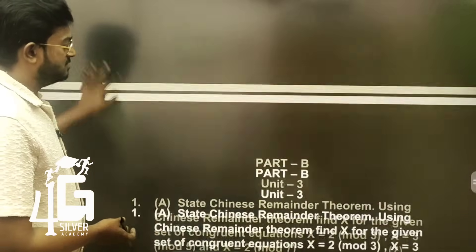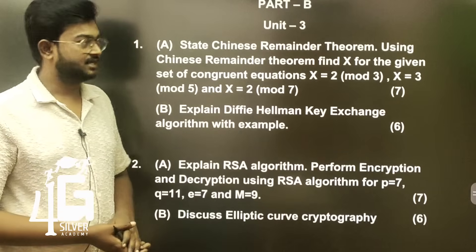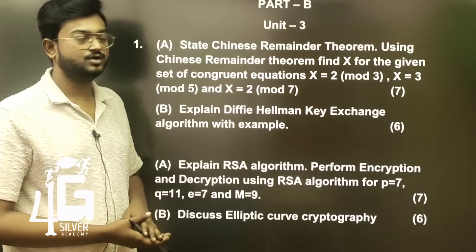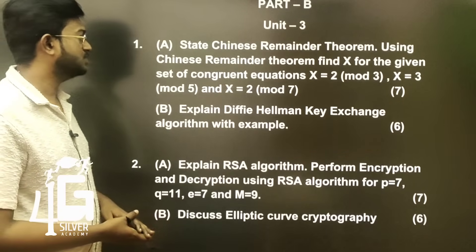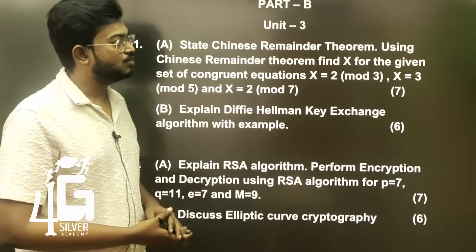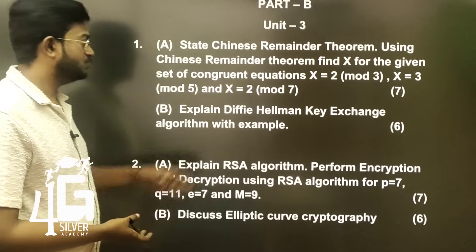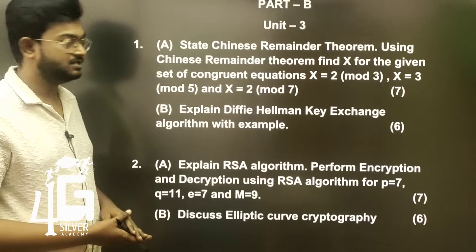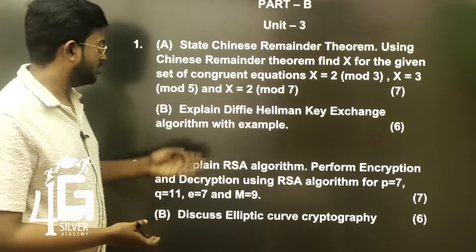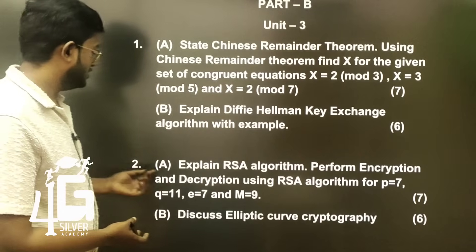Part B, Unit 3 important questions: State the Chinese Remainder Theorem. Using the Chinese Remainder Theorem, find x for the given set of congruent equations: x ≡ 2 (mod 3), x ≡ 3 (mod 5), and x ≡ 2 (mod 7). This is a 7-mark question. Explain the Diffie-Hellman key exchange algorithm with an example — this is a 6-mark question.